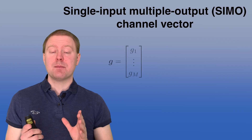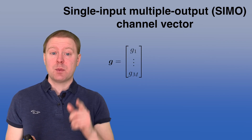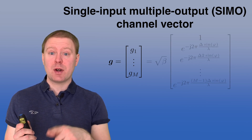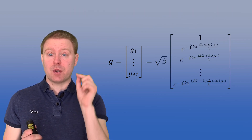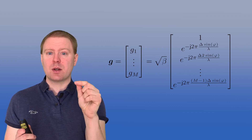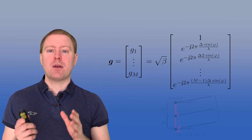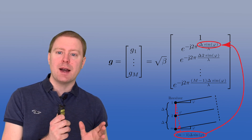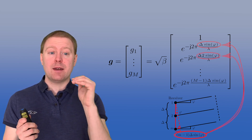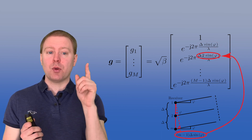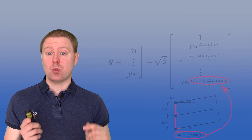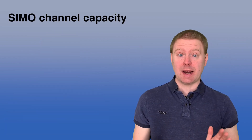Based on this principle we can compute the channel vector g in the line-of-sight SIMO case. All elements g1 to gM have the same channel gain beta, so we have a square root of beta in front. The first antenna has a coefficient of one, the second has a phase shift of e to the power of minus j 2 pi delta sine(phi) divided by lambda, and each subsequent antenna multiplies that phase shift by two, three, and so on up to M minus one.